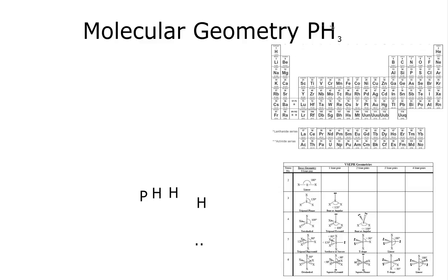Phosphorus is found in group 15 or 5A, so it has five valence electrons. Hydrogen is found in group one, so has one valence, but we have three of them. So 5 plus 1 plus 1 plus 1 is 8, so this molecule has a total of eight valence electrons.